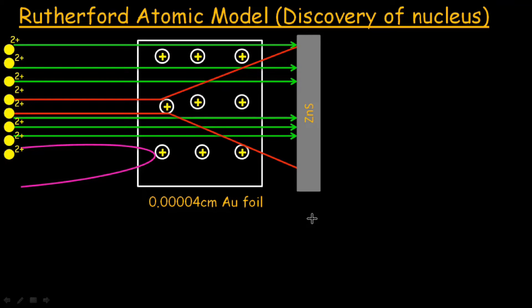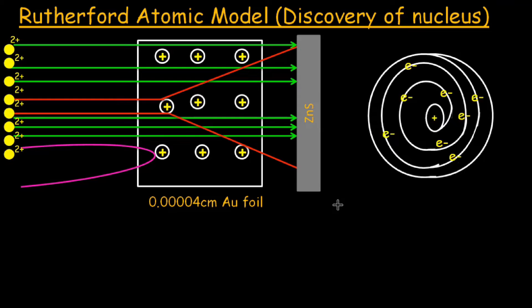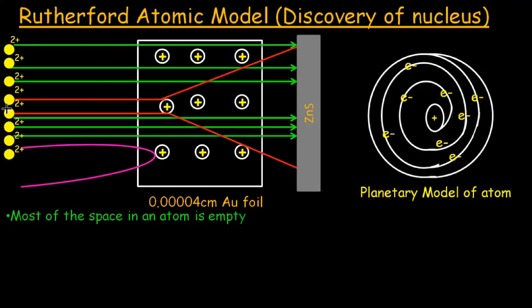Based upon his experiment, he presented a planetary model of atoms. He found that most of the space in an atom is empty because most of the alpha particles pass straight through the foil. They didn't deflect. Therefore, most of the space in the atom is empty.